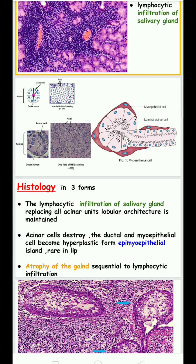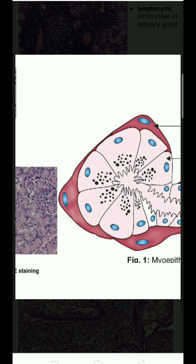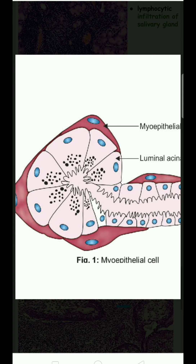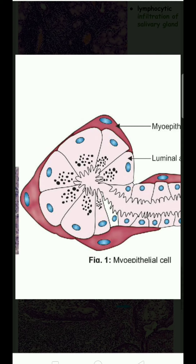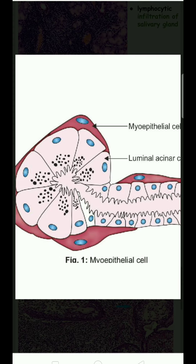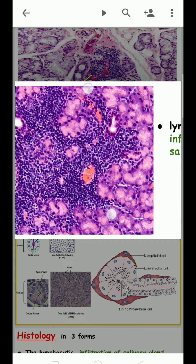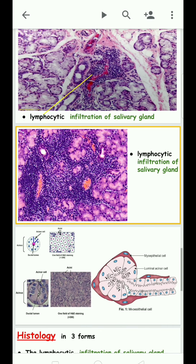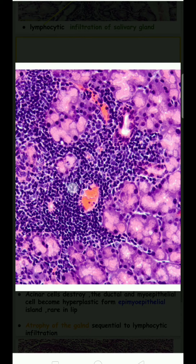To summarize the three histological forms: one, acinar cells get atrophied and replaced by inflammatory infiltrates; two, acinar cells are destroyed and myoepithelial and ductile epithelial cells become hyperplastic, forming islands; three, ductile cells are completely atrophied and the salivary ducts are completely destroyed by lymphocytic infiltration.